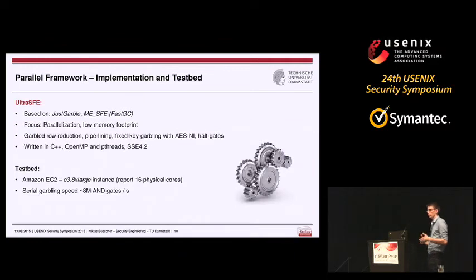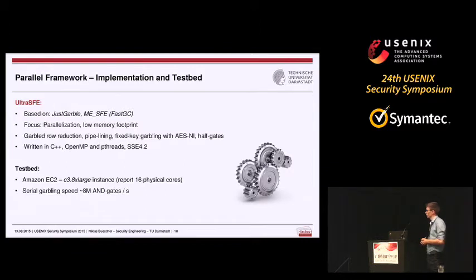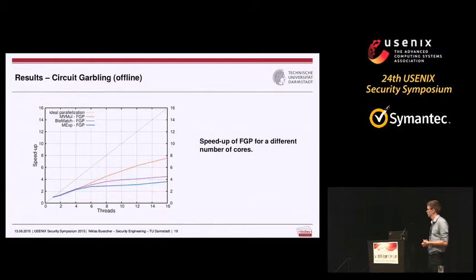We also implemented a parallel framework to evaluate circuit performance. We extended the JustGarble scheme to support parallelization, implemented all currently known optimization techniques, and used OpenMP and pthreads for parallelization. As the testing environment, we used Amazon EC2 cloud instances with 16 physical cores each, located on two sockets, and achieved a garbling speed almost equivalent to JustGarble.